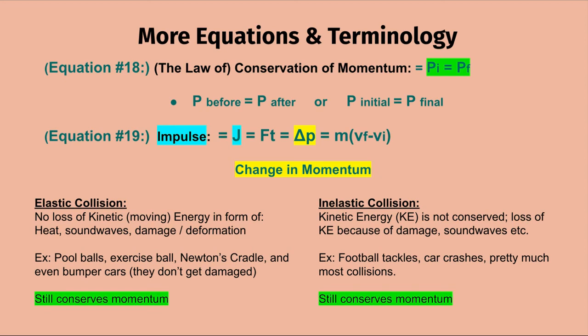Elastic collisions have no loss of kinetic energy in the form of heat, sound waves, damage, or deformation. Examples include pool balls, exercise balls, Newton's cradle, and bumper cars. In an inelastic collision, kinetic energy is not conserved — there is loss due to damage, sound waves, and so on. Most real collisions — football tackles, car crashes — are inelastic. The key point: momentum is still conserved in inelastic collisions.